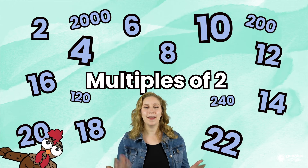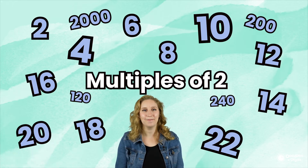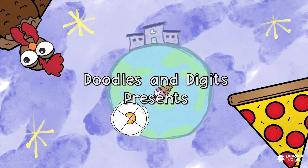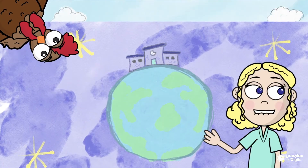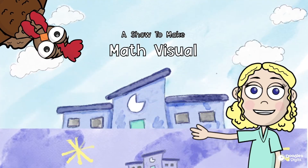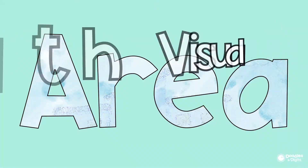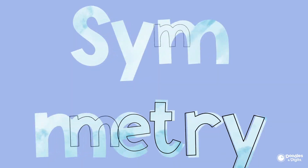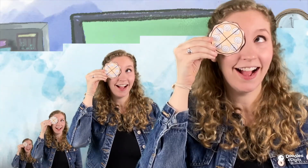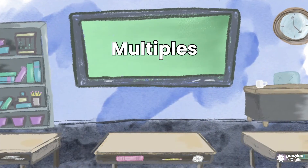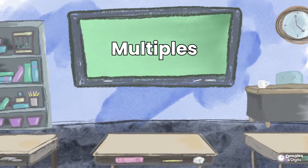Well, that's what we're going to learn by the end of this video. Let's get into it. Doodly doodle, doodly doodle, doodly doodles and digits. Area, symmetry, fractions too. It's all here for you.